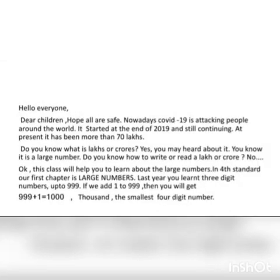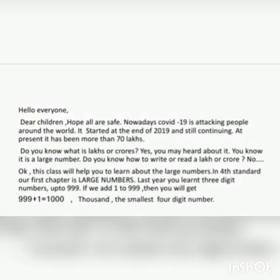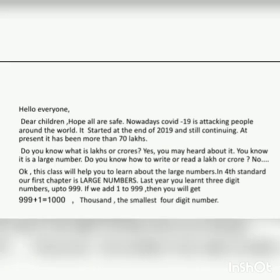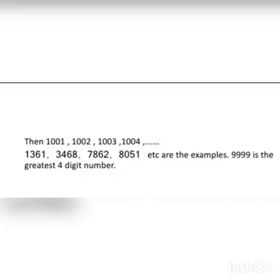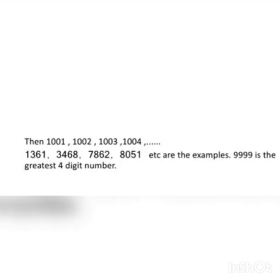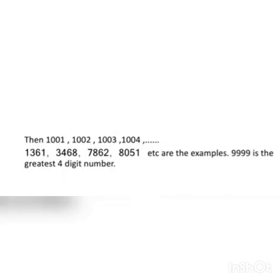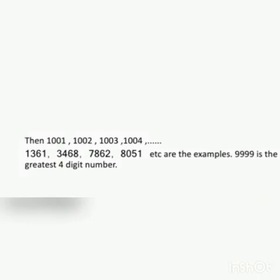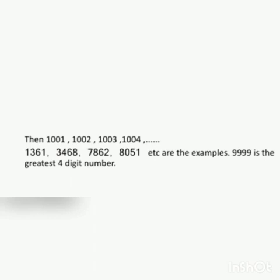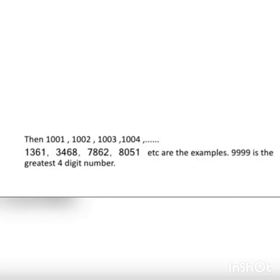About how to read or write large numbers. Last year we learned three-digit numbers up to 999. If you add 1 to 999, you will get 1000, the smallest four-digit number. Then 1001, 1002, 1003, 1004, etc. Next, 1361, 3468, 7862, 8051 are examples of four-digit numbers. The greatest four-digit number is 9999.